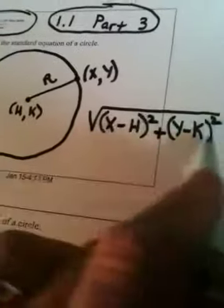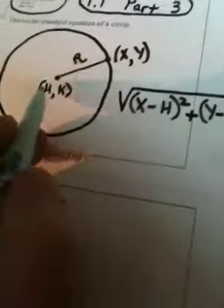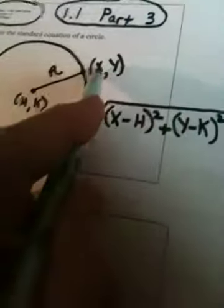Okay? I just went directly into the distance formula and put these two points in. All right? (x-h)² + (y-k)² under the square root is the distance between these two points. And we know that distance is equal to R.